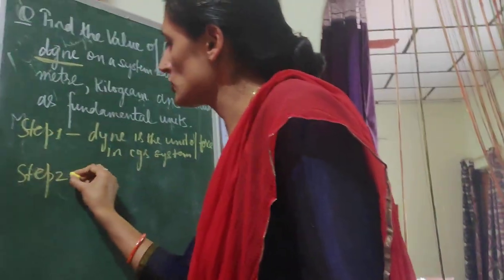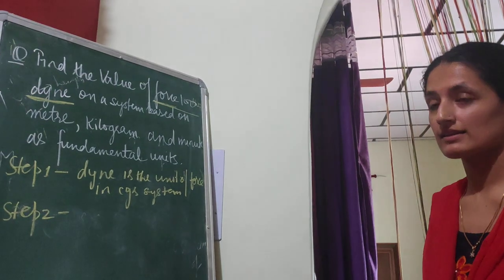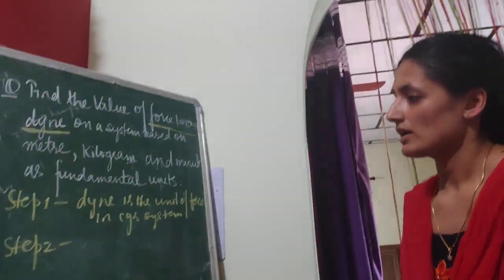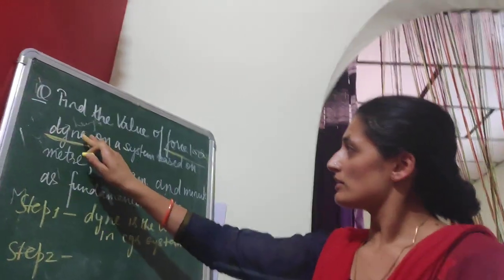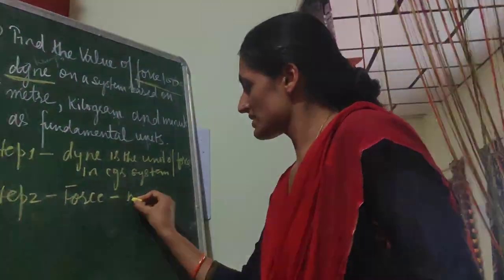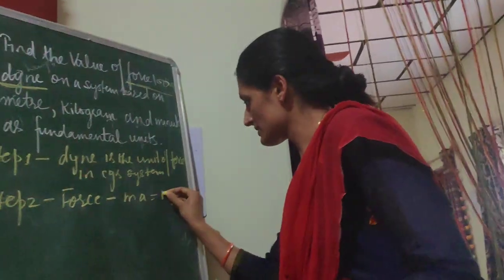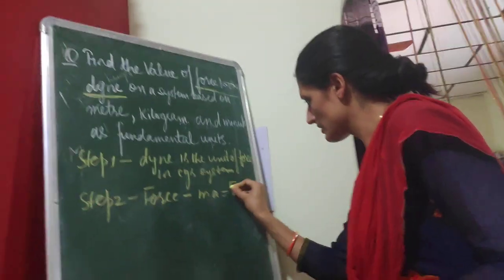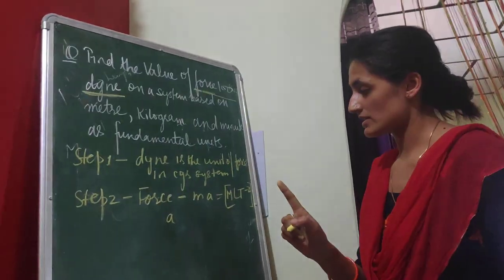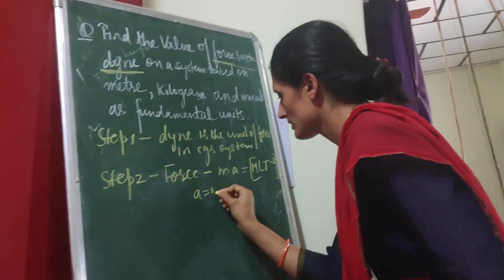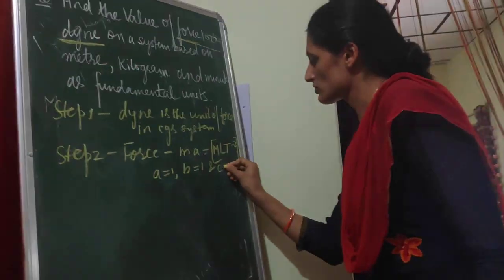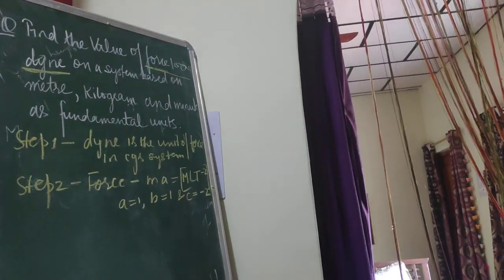For example, length will remain the same in both systems, whether it is CGS or MKM. Step two: you must know the dimensional formula for the physical quantity. Force equals mass into acceleration, so it comes out to be M¹L¹T⁻². Here a equals 1, b equals 1 (power of length), and c equals minus two.